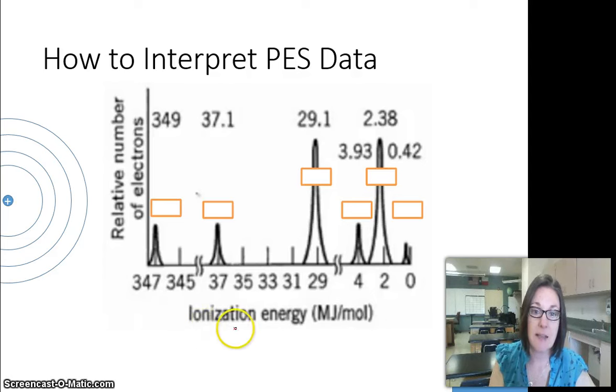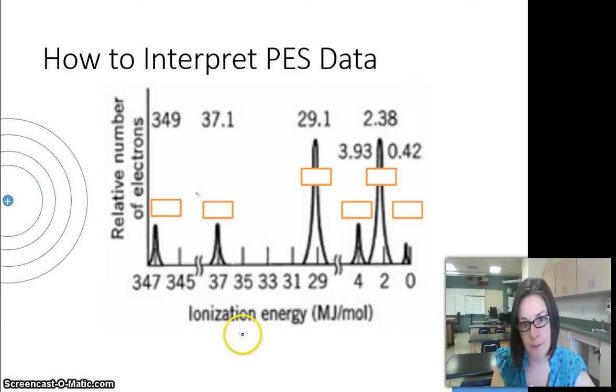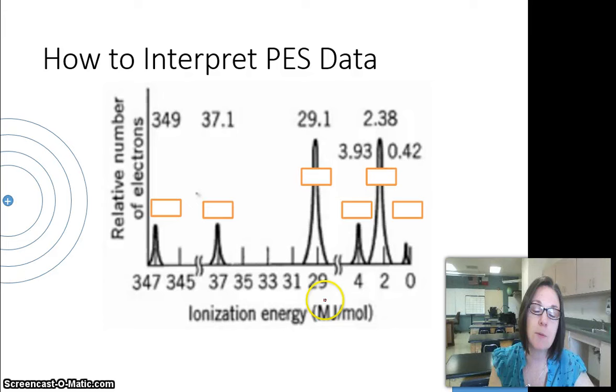The x-axis says ionization energy. That's the amount of energy needed to remove an electron from an atom. If you notice the values, typically an x-axis would start with your lowest value and increase as you move right. This one does the opposite.